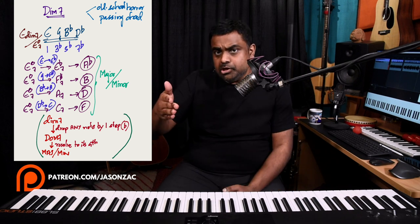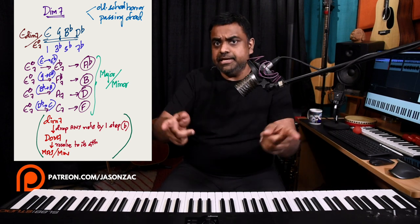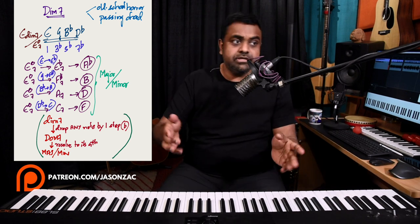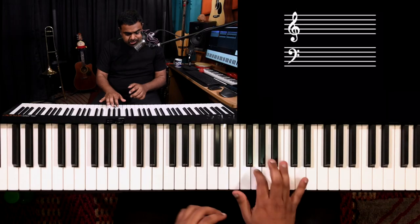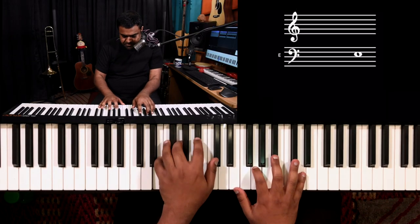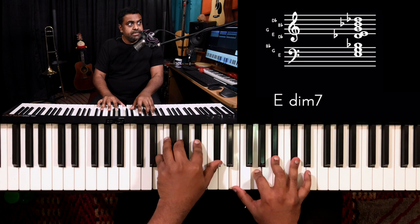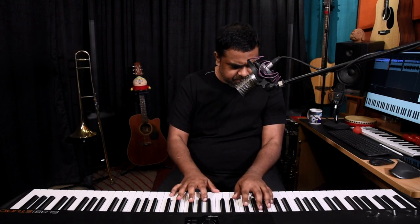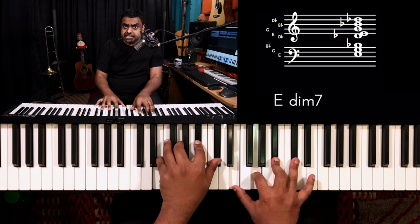Welcome to the next chord, the diminished 7th chord. It's used for a lot of things. The way I tend to use it very often is as a connecting chord, which can actually take itself to a lot of other chords that are dominant in nature. And then those dominant chords can go to different scales. So it's like a chord which has four notes, and let's explore all of this with E diminished 7th.